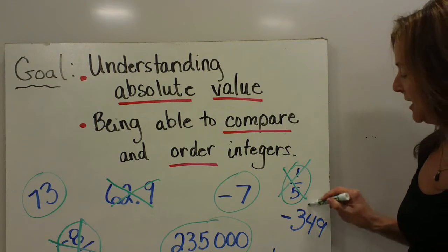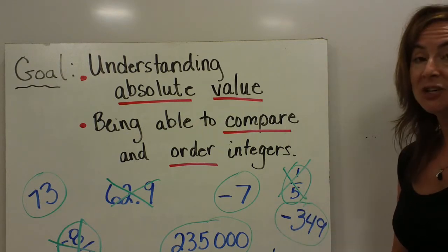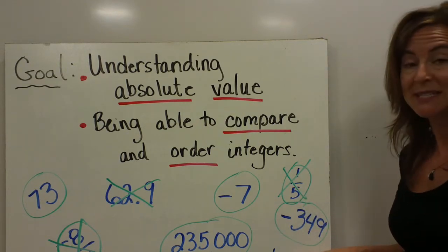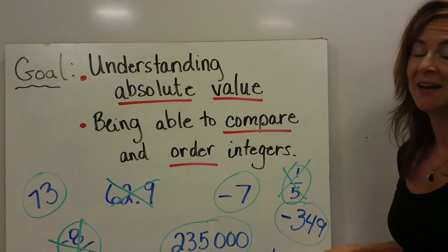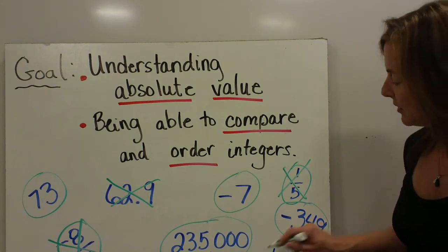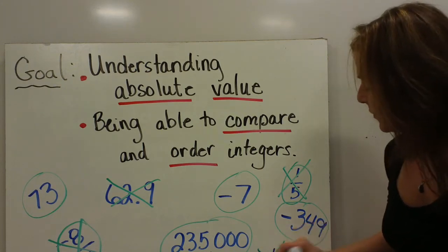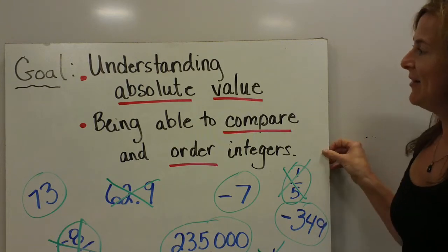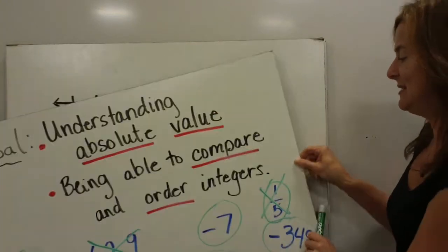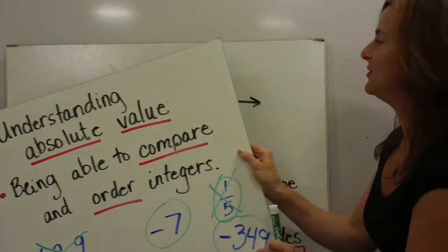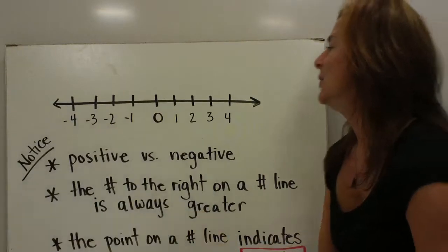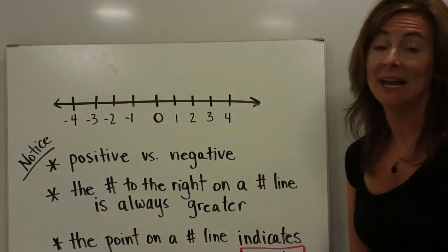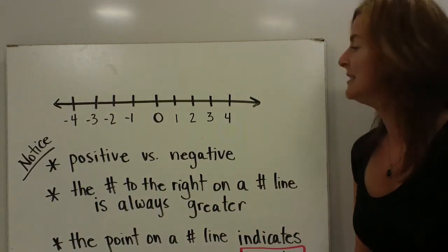Negative 349 is an integer. 0.6, or 6 tenths, does not indicate a whole number, so we would cross it off. Moving on to our lesson after we've reviewed, we're going to take a look at this number line, and I want to point out a couple of things.